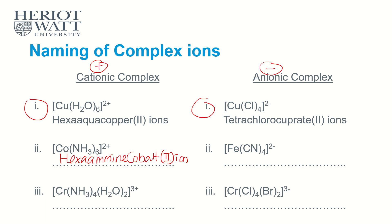Now let's look at negative ions. We have CN here — what is the name of CN? It's cyano. We have four, so it's tetra. The metal is iron, but because the complex is negative, iron becomes ferrate. The full name is tetra-cyano ferrate(II).